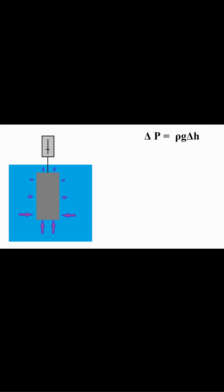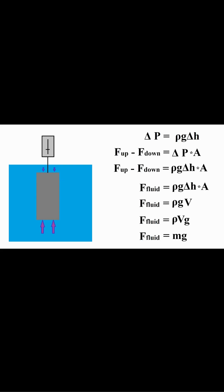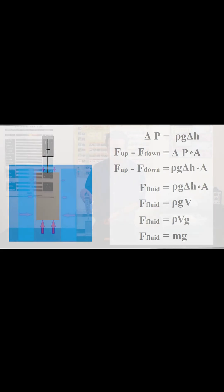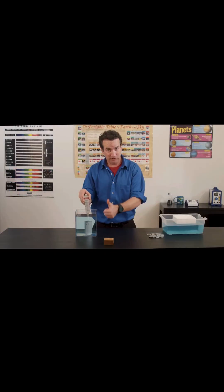The deeper we go underwater, the greater the pressure increases, so the force on the bottom is greater than the force on the top, and the left and right forces cancel out. The net result is that the pressure difference between the top and the bottom — rho g delta h — algebraically becomes equal to the net fluid force on the object. This is the buoyant force.